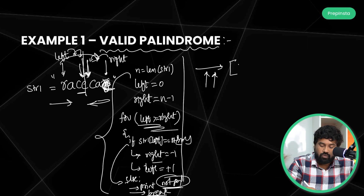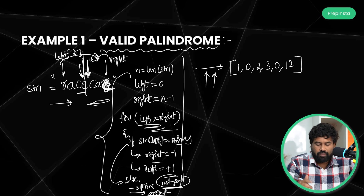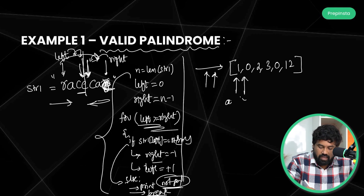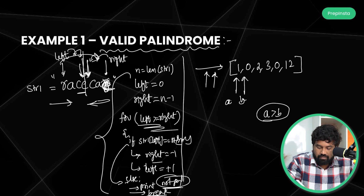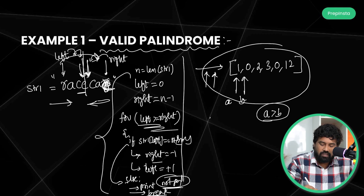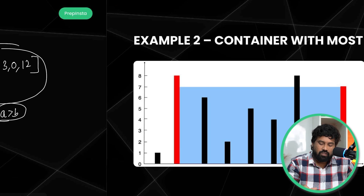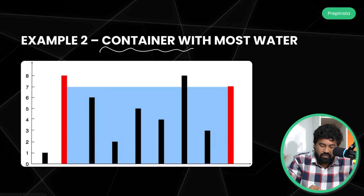For the second example using same-direction (parallel) pointers, there is a LeetCode problem called 'Move Zeros to the End of the List.' Both pointers start from the beginning. I move pointer b first. If b equals zero or meets a certain condition, I swap a and b. I already explained the swap logic earlier so I won't repeat it — let's move on to the next example.